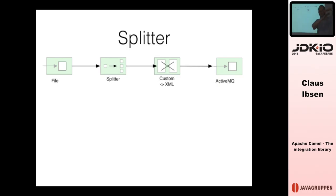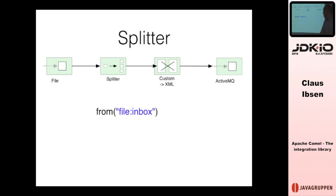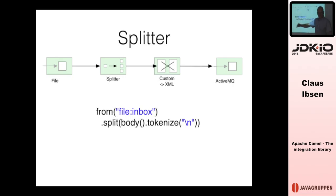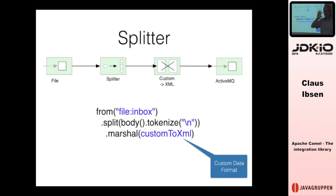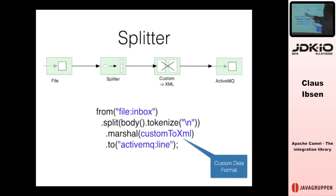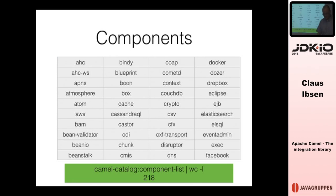A very popular pattern is the splitter. You have a file you want to split line by line — each line needs to be transformed from an in-house format to XML and sent to a message queue. In Camel: from 'file inbox', split the message body using a newline tokenizer, marshal or convert that line to XML using a custom data format. If the file used a common format like CSV or JSON, there are out-of-the-box Camel components for that. Four patterns, four lines of Java code — they match one-to-one.